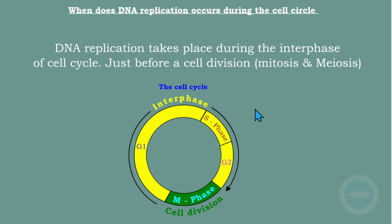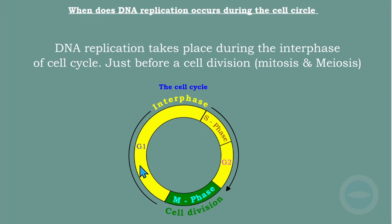Here is the cell cycle — I hope you remember this from Grade 10. In the cell cycle we have the interphase and the cell division. Interphase is divided into three: Growth 1, S phase (synthetic phase), and Growth 2. DNA replication takes place during the interphase. So when asked when DNA replication takes place during the cell cycle, you say: during the interphase.